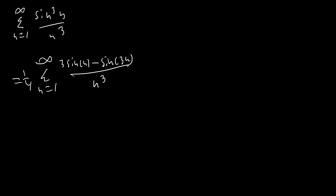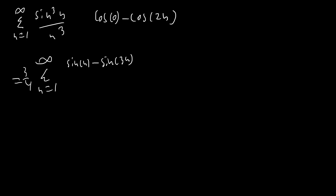Now we're going to convert this into an integral. Last time we had 1 minus cosine of 2n, which we could rewrite as cosine of 0 minus cosine of 2n — we want two similar things subtracting one another. So we bring the 3 outside, giving us sine of n over 1 minus sine of 3n over 3, all over n cubed. Now we have sine of 1n over 1 minus sine of 3n over 3, which is really nice.